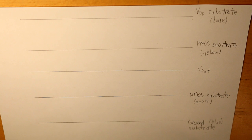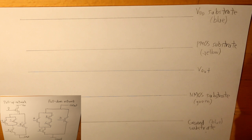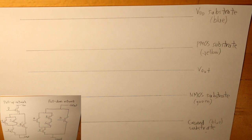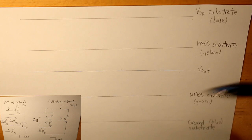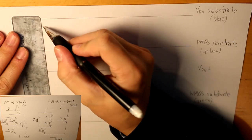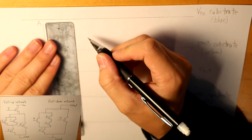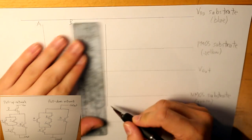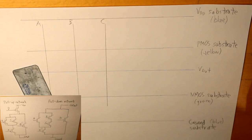For our following function, we have five inputs: A, B, C, D, and E. They're going to be labeled as vertical lines perpendicular to all the horizontal lines already drawn. So we have the first line labeled as A, a second line labeled as B, and a third line labeled as C.